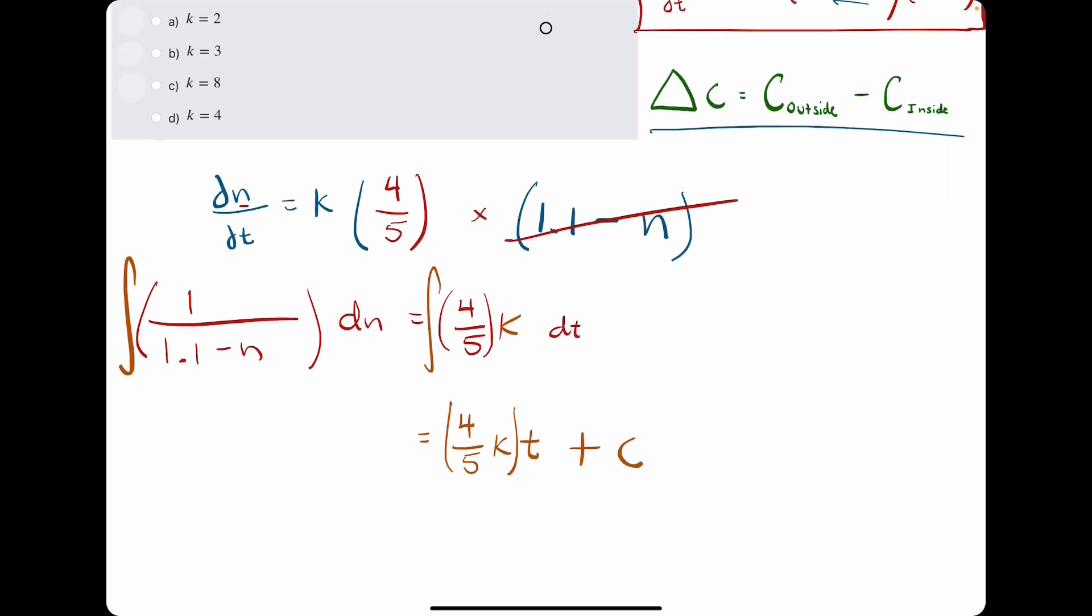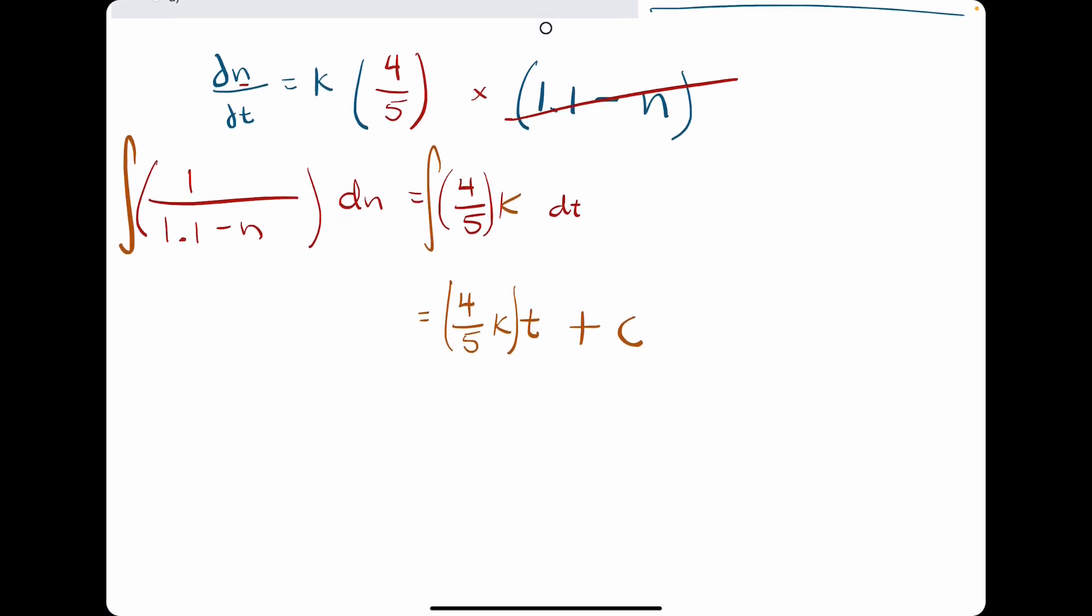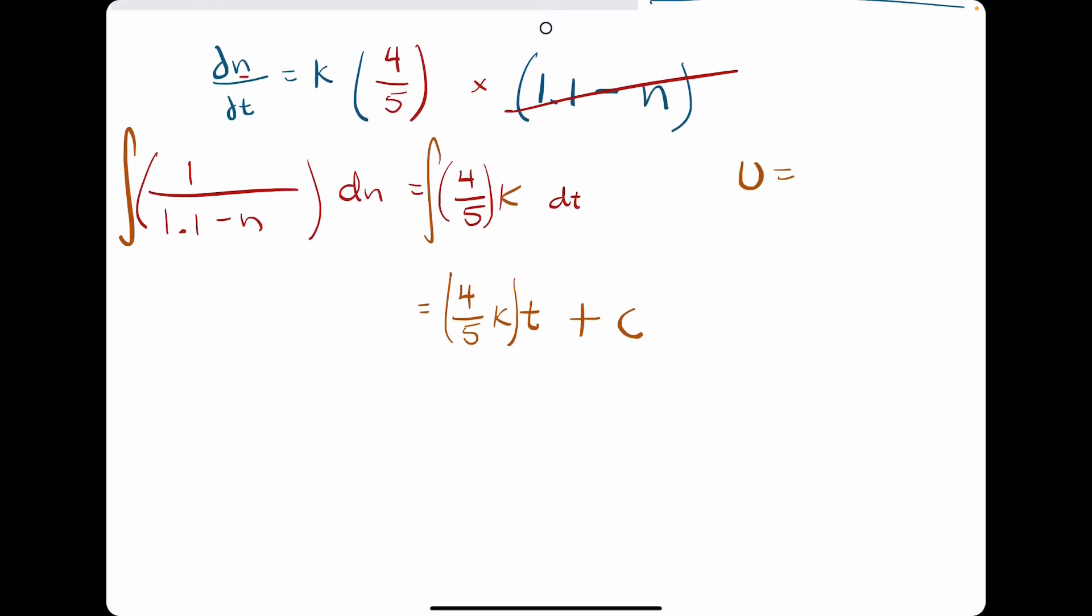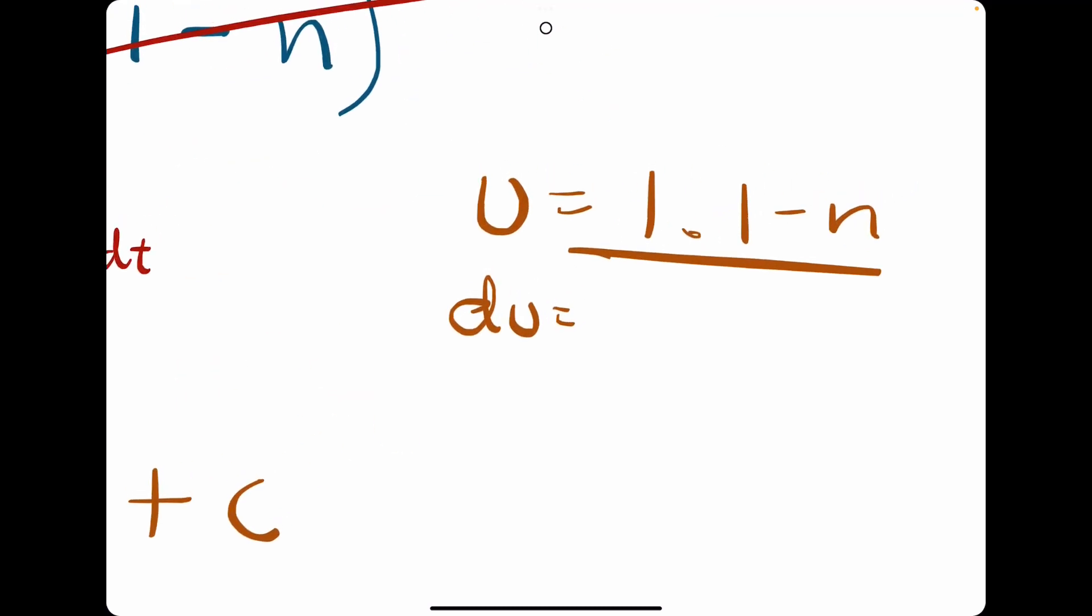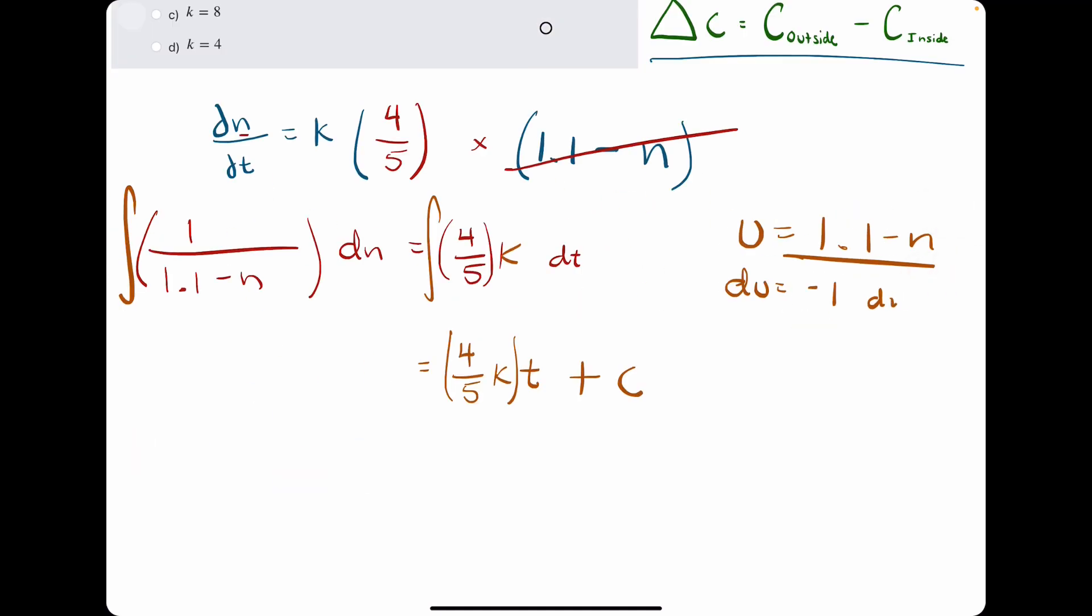It still will actually use the natural log situation. But in all these cases for this problem, you can assume that it's going to be a negative natural log. And let's briefly see if we can talk about why. So if we represented this using u substitution, our u would be the 1.1 minus n, which makes our du, our derivative of this, negative 1 dn.